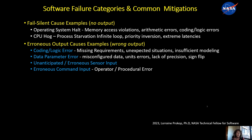I've broken erroneous output down into four categories. Coding and logic errors — this includes missing requirements, which turns out to be a large portion of software errors: unexpected situations the software didn't know how to handle, or just plain wrong code. Data parameter errors are also common, as more and more modern software is being driven by data, and if there's a data parameter wrong, it'll cause the software to behave wrong.